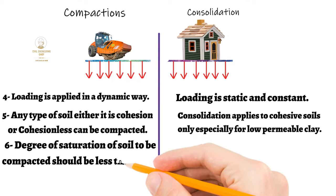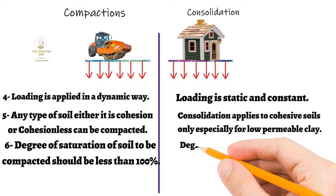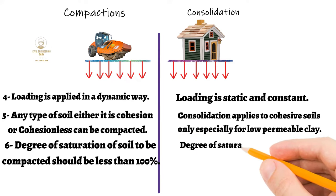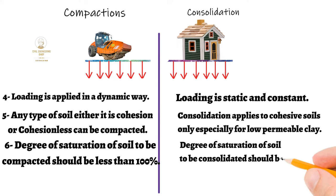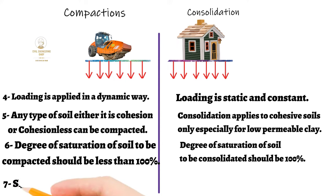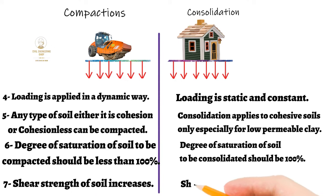The degree of saturation of soil to be compacted should be less than 100%, while in the case of consolidation, the degree of saturation of the soil to be consolidated should be 100%. With the help of compaction, the shear strength of soil increases.